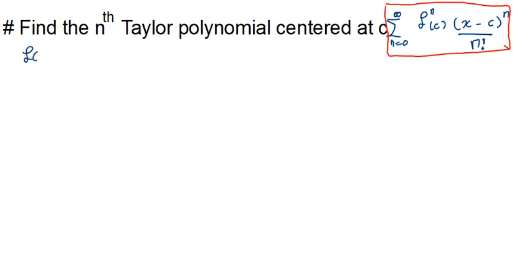For the first example, we are given f(x) equals 2 over x, our value of n is 3, and our C equals 1. The first thing we have to do is find the derivatives up to the third derivative.